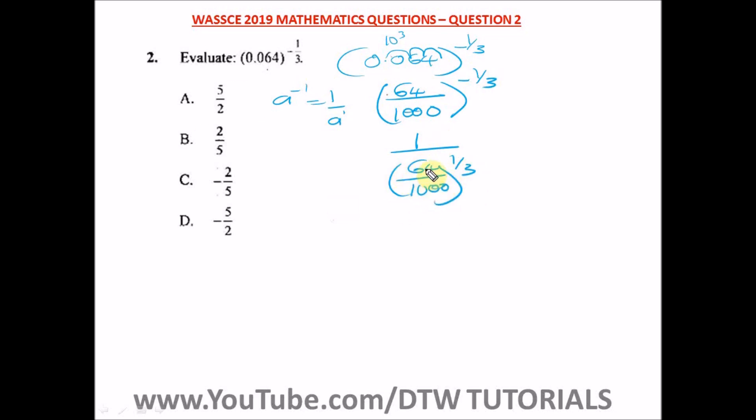So from here, we can convert this. We can raise this to some powers. So here we have for 64, 4 times 4 times 4, that's 4 times 4 times 4, give us 64. So we have 4 raised to power 3 divided by 10, and this 1000 is 10 raised to power 3.